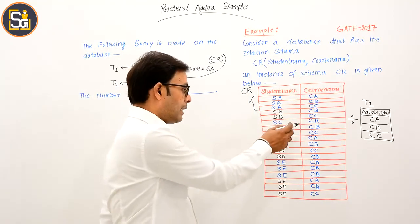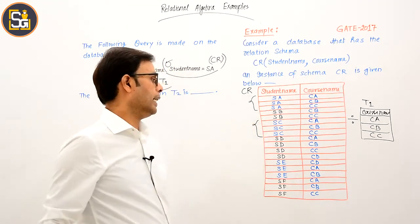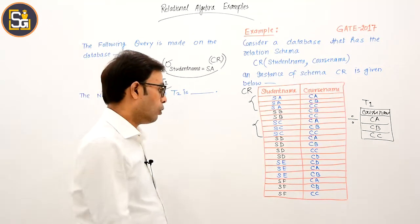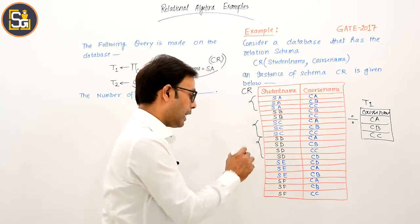Now let's see the second one: CA, CB, CC. This means SC is a student who has enrolled in courses at three places. After this: CA, CB, CC. SD is a student who has done...